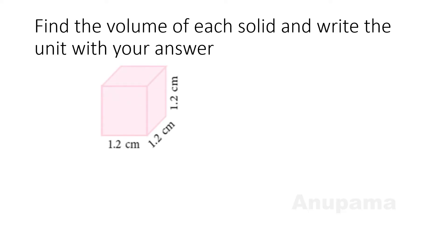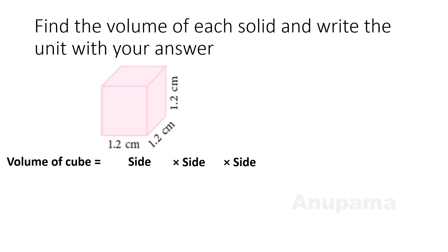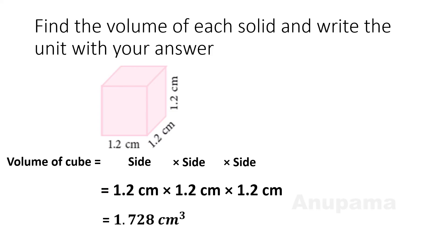Here is one more shape — it is a cube because each side is equal: 1.2 centimeters. Always remember, every cube is also a cuboid. The volume of a cube equals side × side × side. Putting in the values: 1.2 × 1.2 × 1.2 = 1.728 centimeter cube.